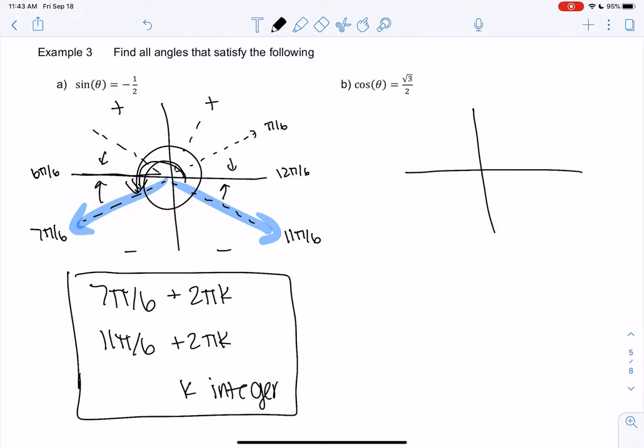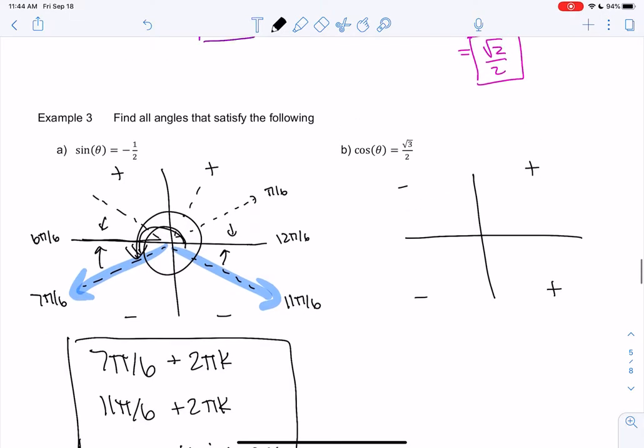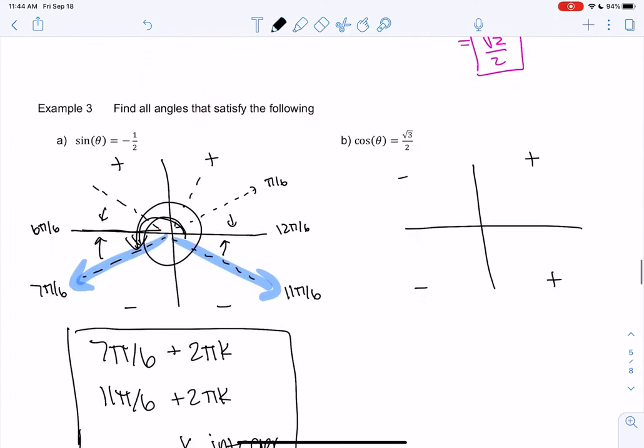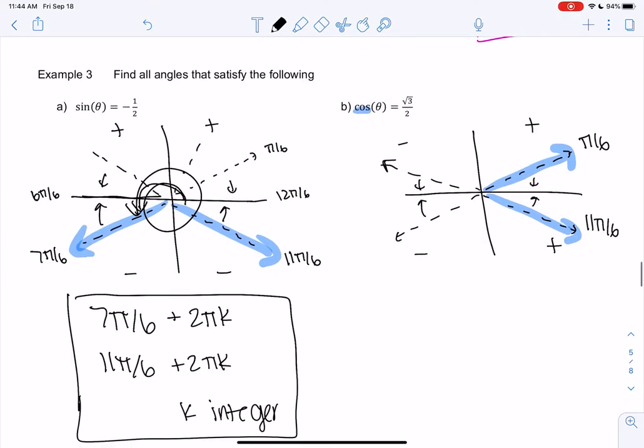Alright. And the last one, cosine is root 3 over 2. So cosine is x values, so positive, positive, negative, negative. And then root 3 over 2. Have we memorized this yet? Maybe. Oh, it looks like it's also π over 6. So same idea. I'll draw the π over 6s. These all would be reference angles of π over 6, and then we want the ones that are positive. So I'm going to keep the one on the right side for cosine. So in this case we get π over 6 and 11π over 6. And then we just again add 2kπ, 2πk or 2kπ either.